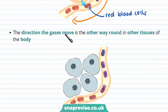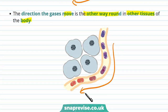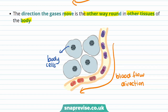The direction these gases move is the other way around in other tissues of the body. In this diagram, the direction of blood flow goes toward the body cells. There is a high concentration of carbon dioxide in the body cells and a low concentration in the capillaries, so carbon dioxide moves into the capillaries from the body cells. As the blood vessel has come from the lungs, there is a high concentration of oxygen, while body cells have a low concentration, so oxygen moves down the concentration gradient through diffusion into the body cells.